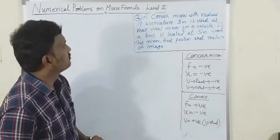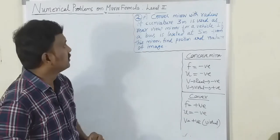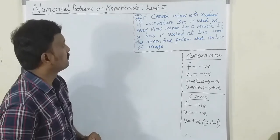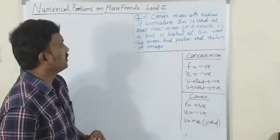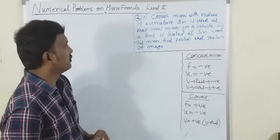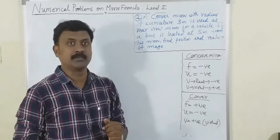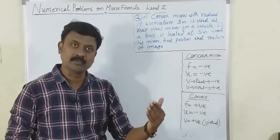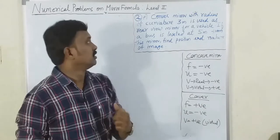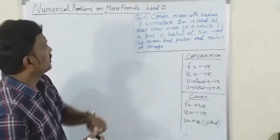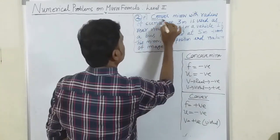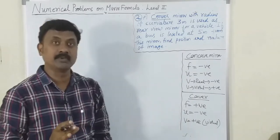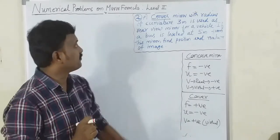Second problem: a convex mirror with radius of curvature 3 meters is used as a rear-view mirror for a vehicle. A bus is located 5 meters from the mirror. Find the position and nature of the image. The mirror is convex, so f is always positive.